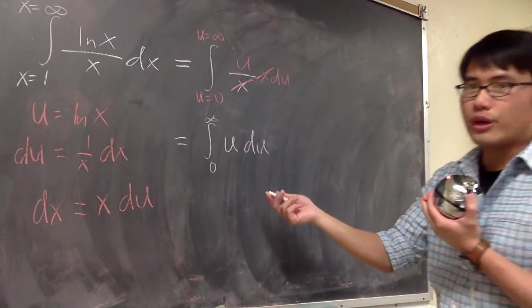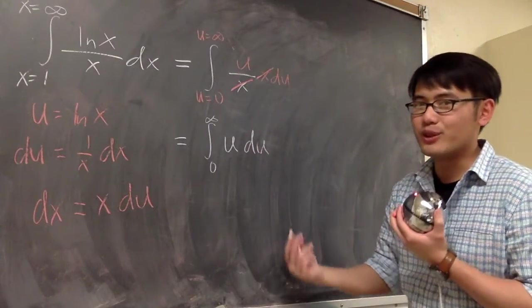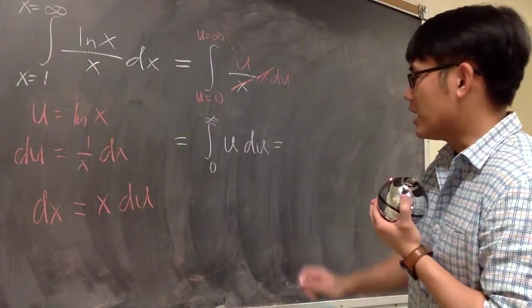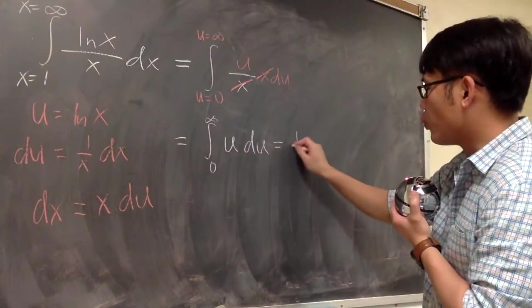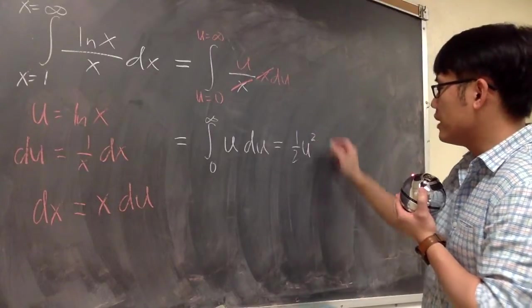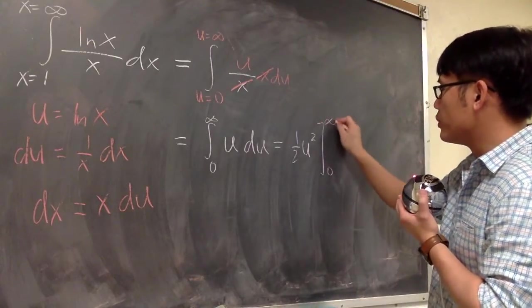In fact, you can draw a conclusion right here already. This is going to be diverged. But to finish this up, you are going to just integrate this guy, which is 1 half u squared, and then you go from 0 to infinity.